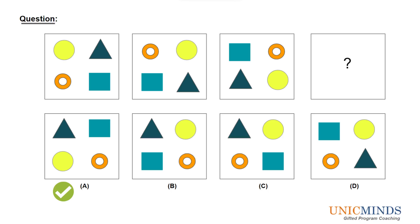So the fluorescent circle comes to the second position, and then in the third figure it again moves one step down. So the circle comes down. The fourth figure will be a clockwise rotation of the third picture — the fluorescent circle will come one position to the left, the blue triangle will go one position above, and the square and the donut will also move correspondingly. And option A is hence the correct answer.